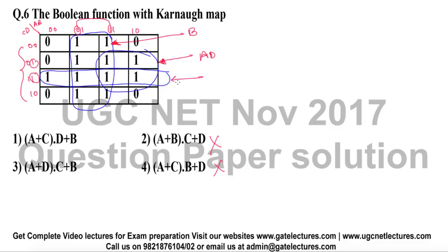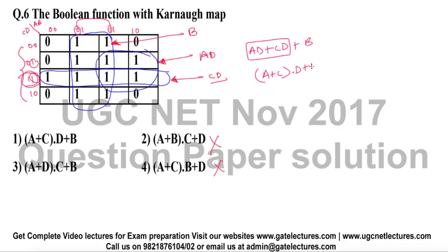And what is this third sub-cube representing? In this entire sub-cube, the only term that is not changing is CD, so we have CD. The boolean expression is therefore AD + CD + B. From these two terms we can take D as common, giving us (A + C)·D + B. This is option number one, so option number one is correct and options two, three, and four are wrong.